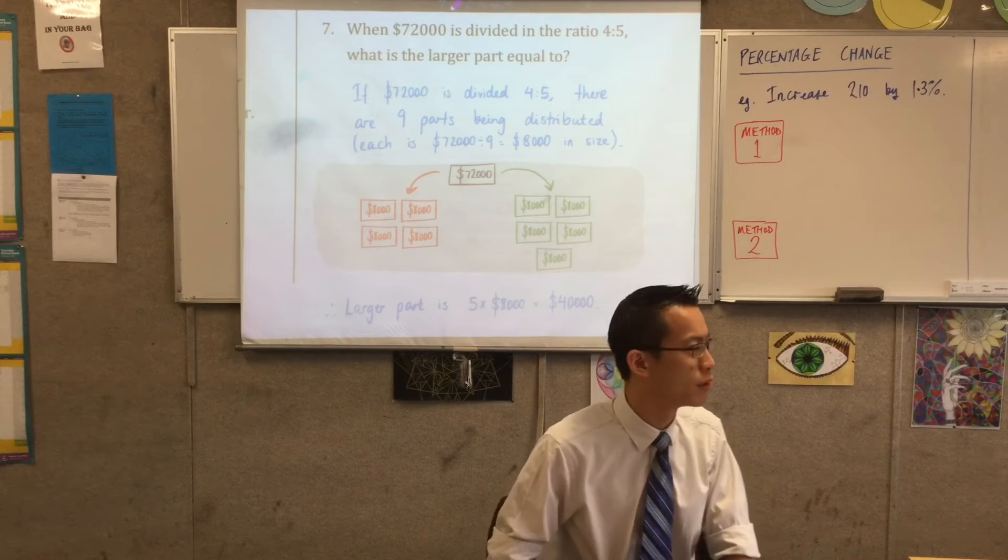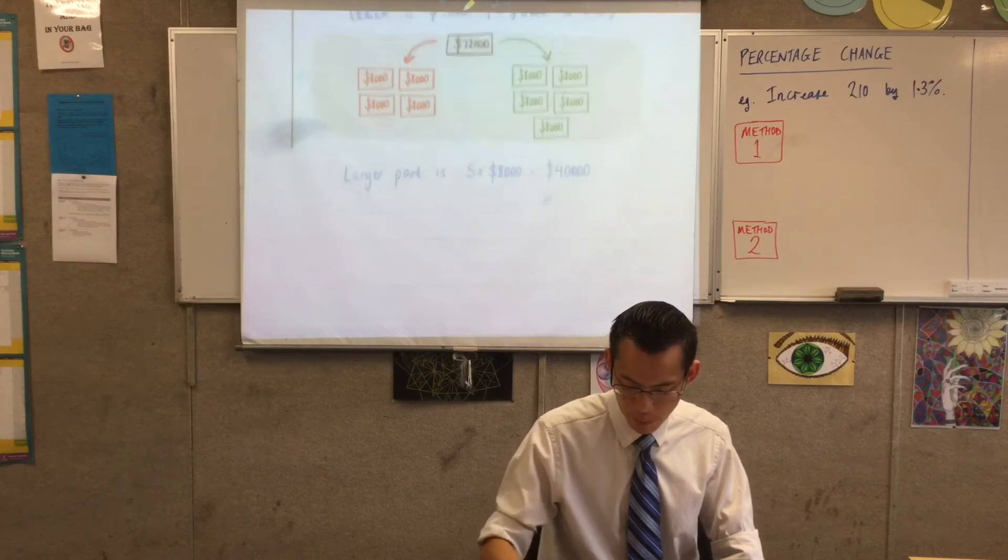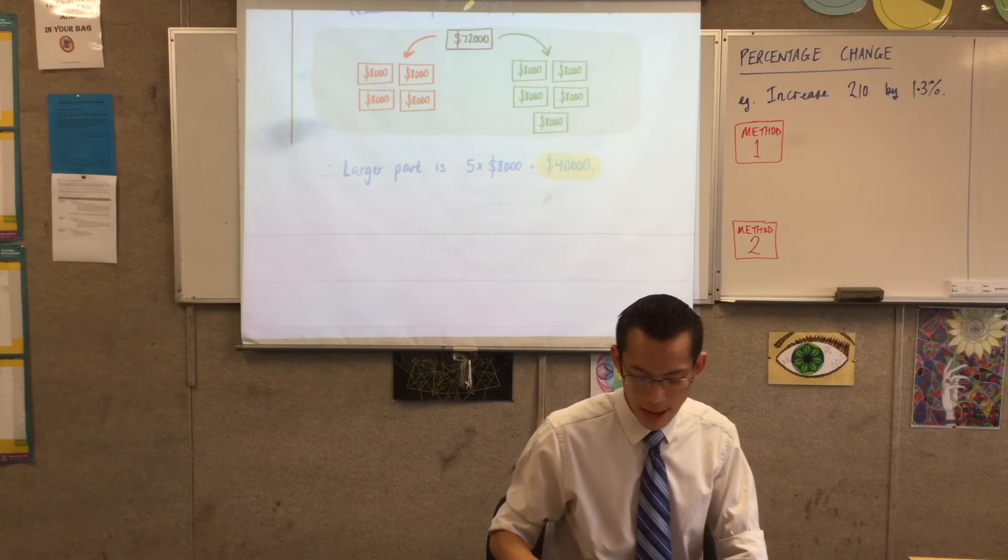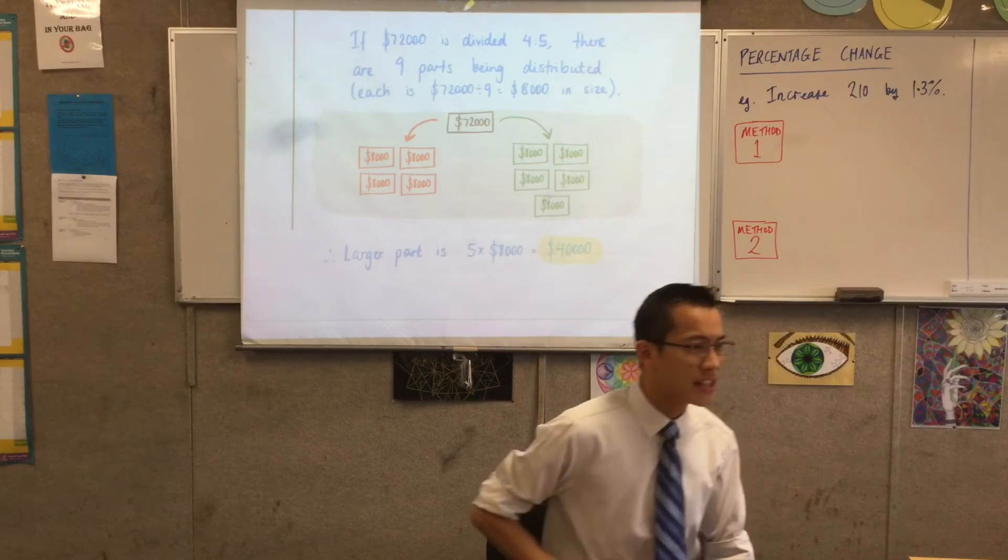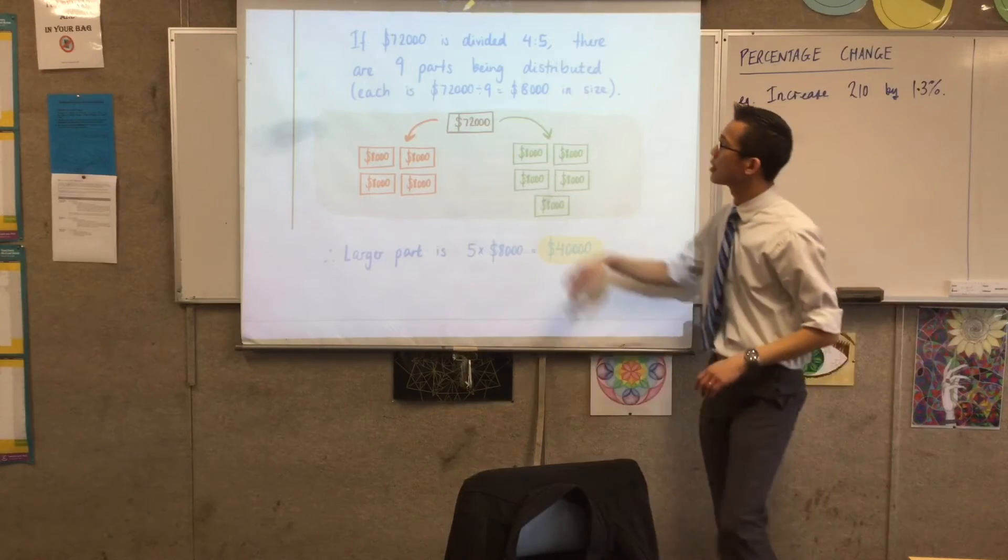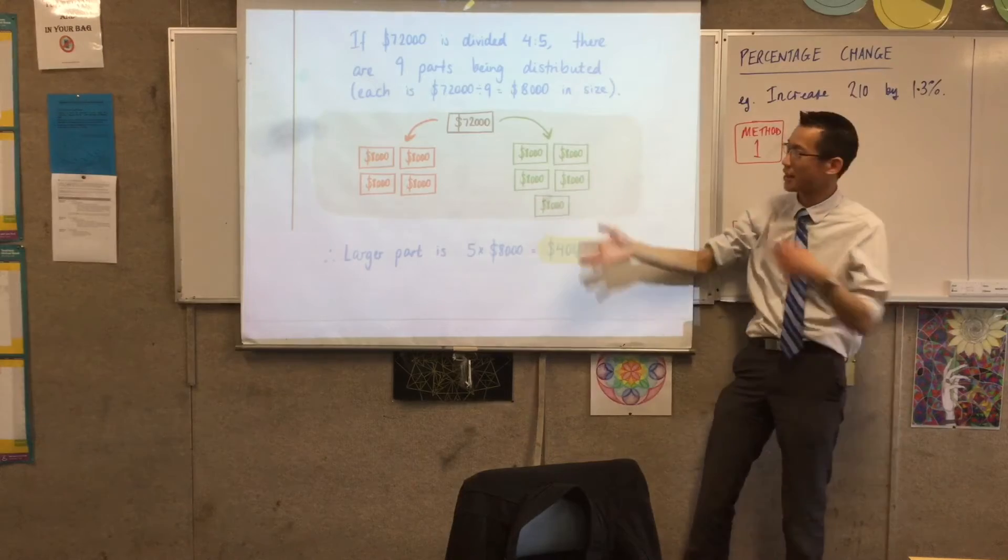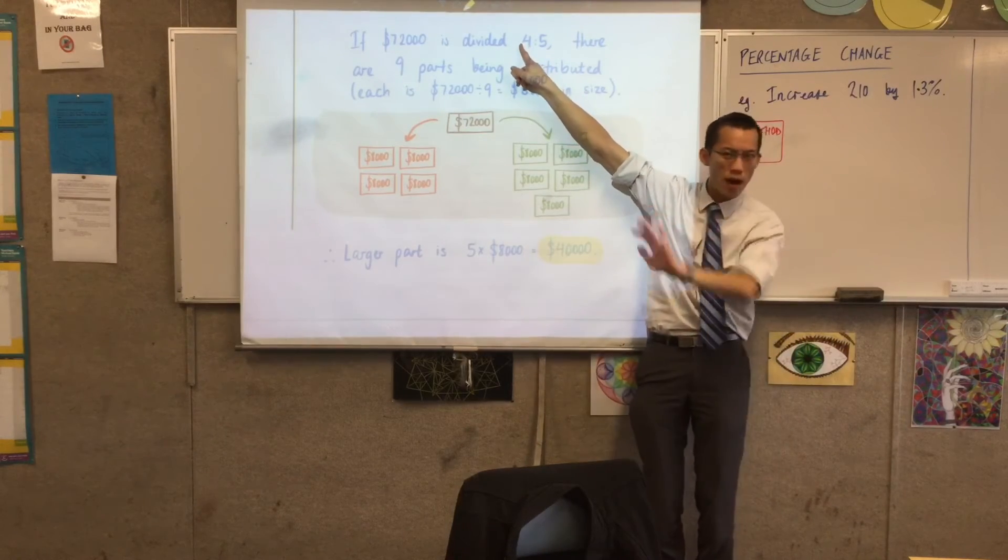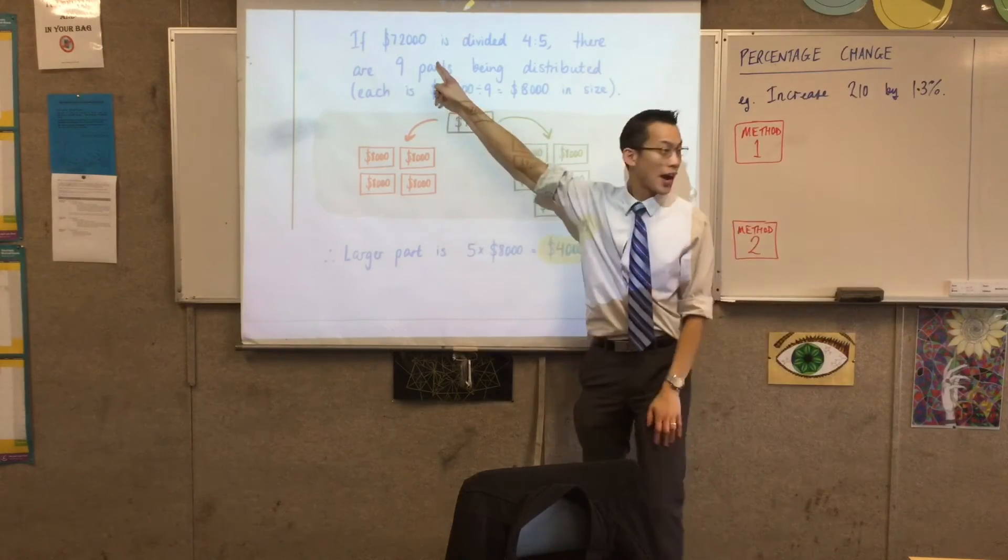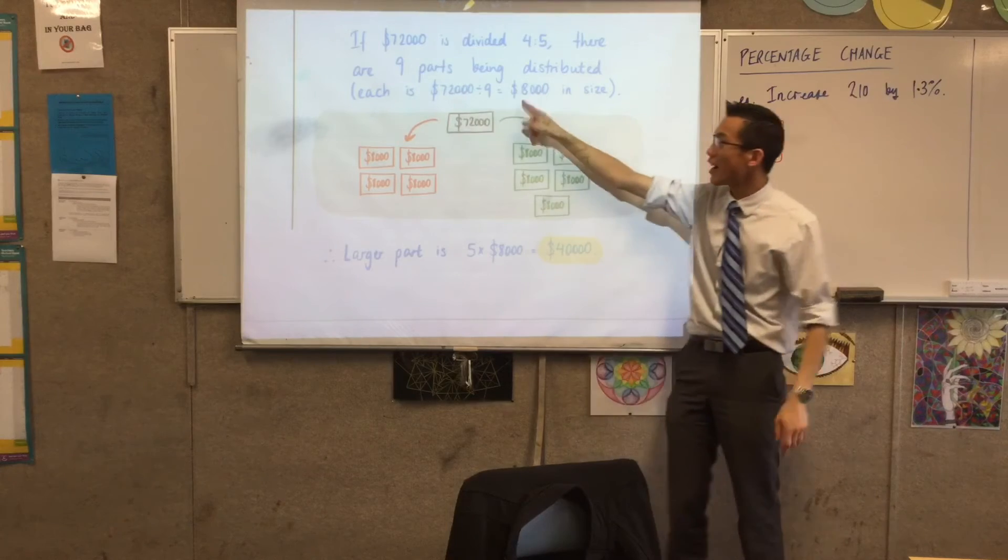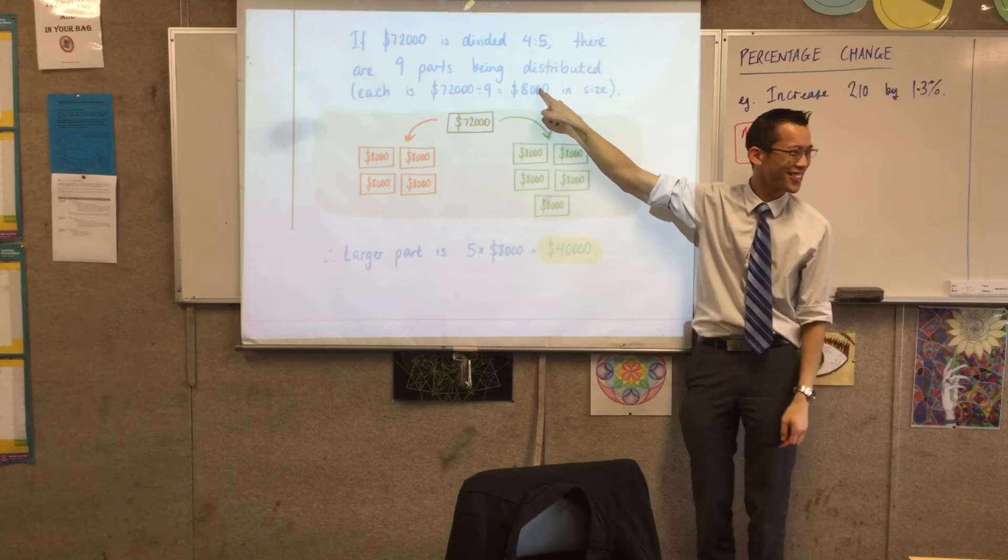Now, you guys see I always put more working than you probably need. Here's my answer down here. The larger part I've got is 40,000. Now how do we logic this out? There's an important idea here. If you're dividing four to five, right? Four to five. And I literally try and picture this, okay? One of the people gets four parts and the other person gets five parts. So if I add up all those parts, there are nine of them, right? And they're all supposed to be equal, yeah? So if there are nine parts, then that's where I get each one of those little pieces has to be $8,000.